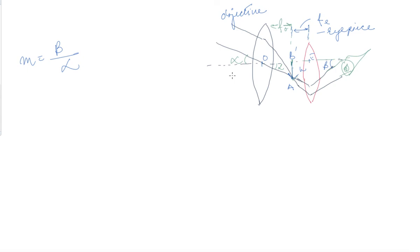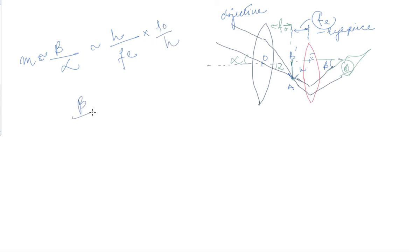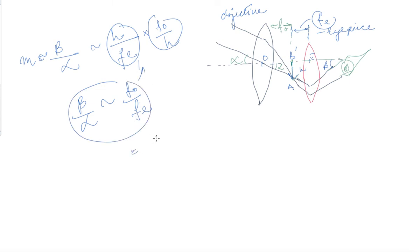This magnification is approximately equal to h upon fe for beta, and h upon f0 for alpha. So beta upon alpha equals (h/fe) divided by (h/f0), which gives us f0 upon fe. Here beta was h upon fe and alpha was h upon f0, so putting these together we get magnification M = f0 / fe.